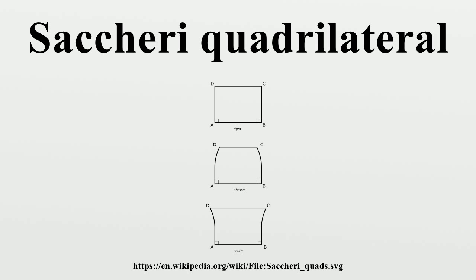Two Saccheri quadrilaterals with congruent bases and congruent summit angles are congruent. Two Saccheri quadrilaterals with congruent summits and congruent summit angles are congruent. In the hyperbolic plane of constant curvature, the summit of a Saccheri quadrilateral can be calculated from the leg and the base using a specific formula. Tilings of the Poincaré disk model of the hyperbolic plane exist having Saccheri quadrilaterals as fundamental domains. Besides the two right angles, these quadrilaterals have acute summit angles, and the tilings exhibit an asterisk NN22 symmetry.